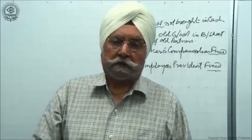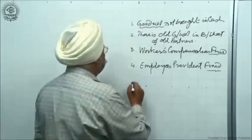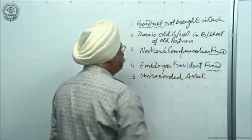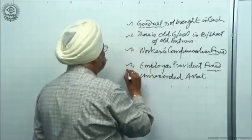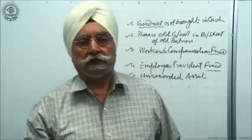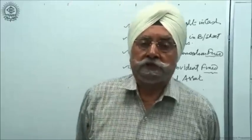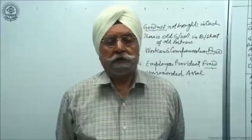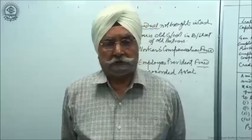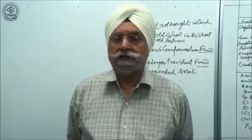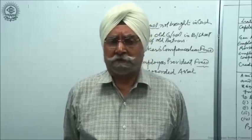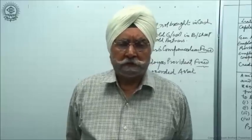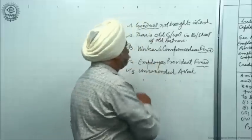And lastly, one more point I will cover today — that is the treatment of unrecorded assets. These four things I am going to take up with you so that you are able to learn how to treat them when doing a full question on admission of a partner, where you will be required to prepare a revaluation account, a cash account, capital accounts of all the partners, and also the balance sheet. In such board questions, the examiner generally sets one item which is a little ticklish — all other items are very simple, but he definitely gives one item where students will have to exercise a little caution. These are the items we will cover today.